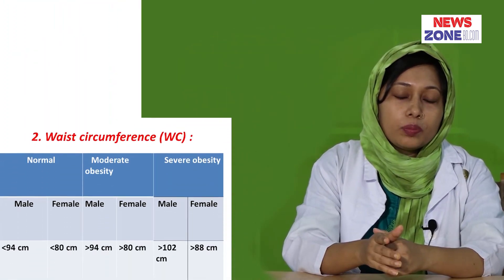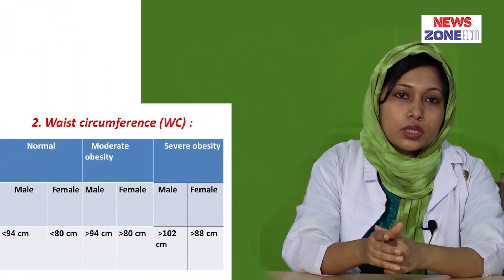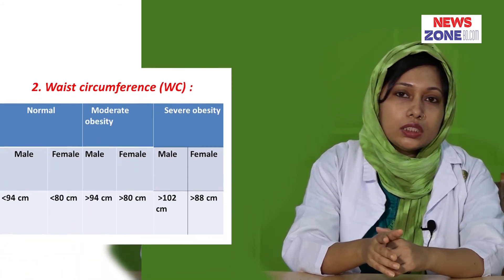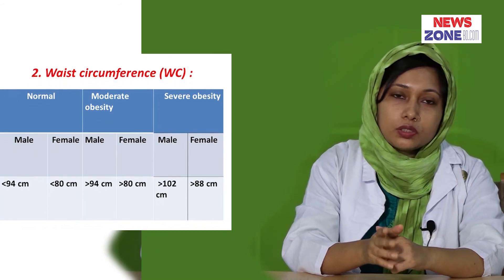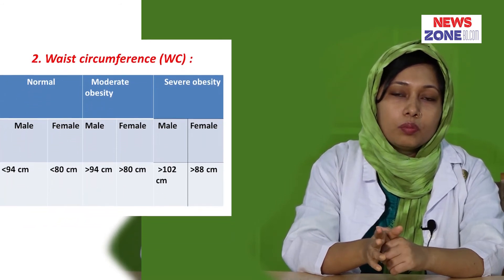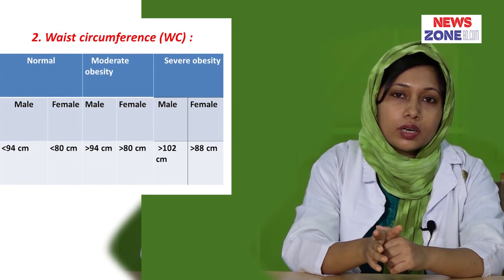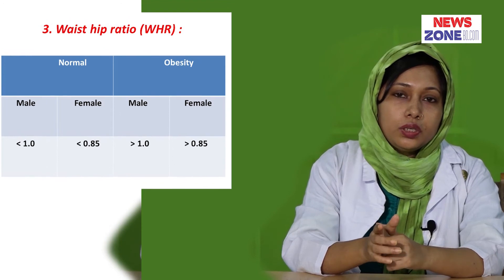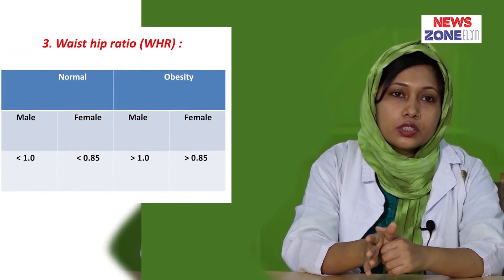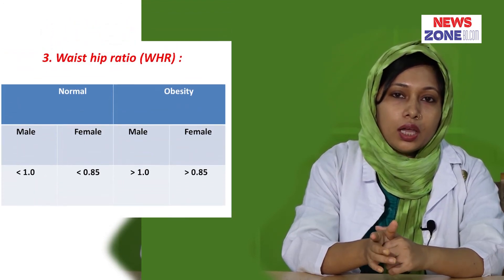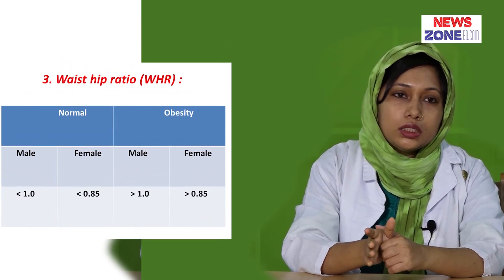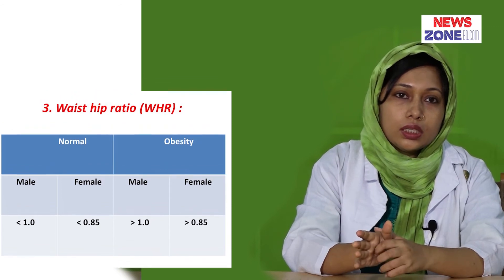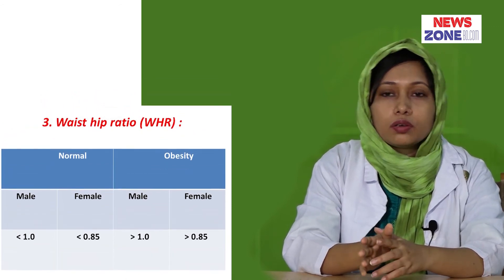Another anthropometric measurement tool is waist circumference. In males, more than or equal to 94 centimetres is regarded as obese, and in females, more than or equal to 80 centimetres of waist circumference is regarded as obese. Another tool is the waist-to-hip ratio. In males it is more than 1, and in females more than 0.85 is regarded as obese.